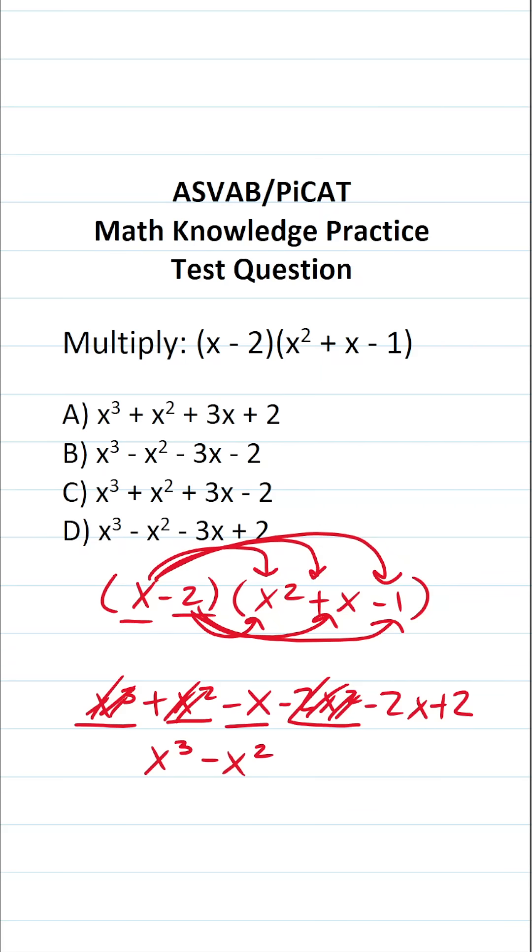Then we have negative x. Its corresponding like term is negative 2x. Negative x minus 2x is negative 3x. And then finally, we just have plus 2. So the answer to this one is x to the third minus x squared minus 3x plus 2, which you can see is answer choice D.